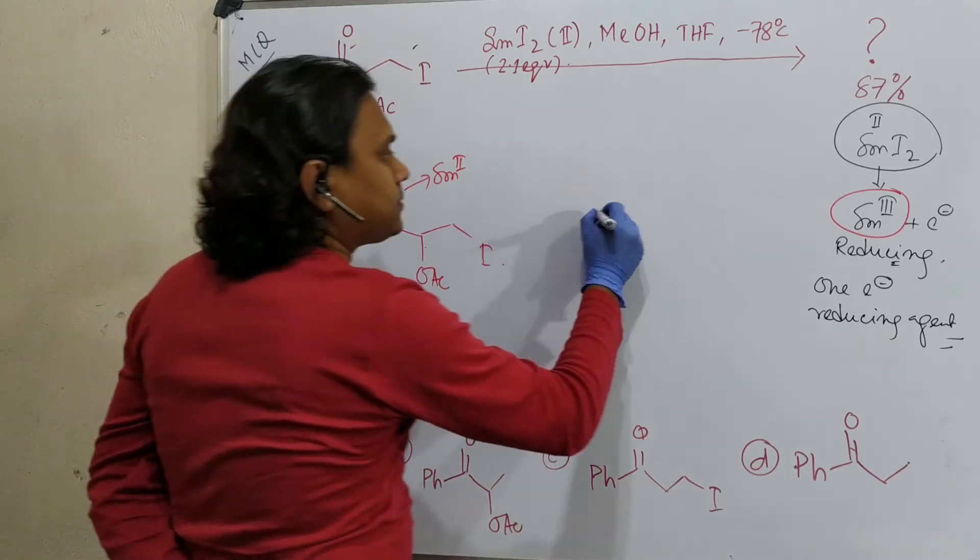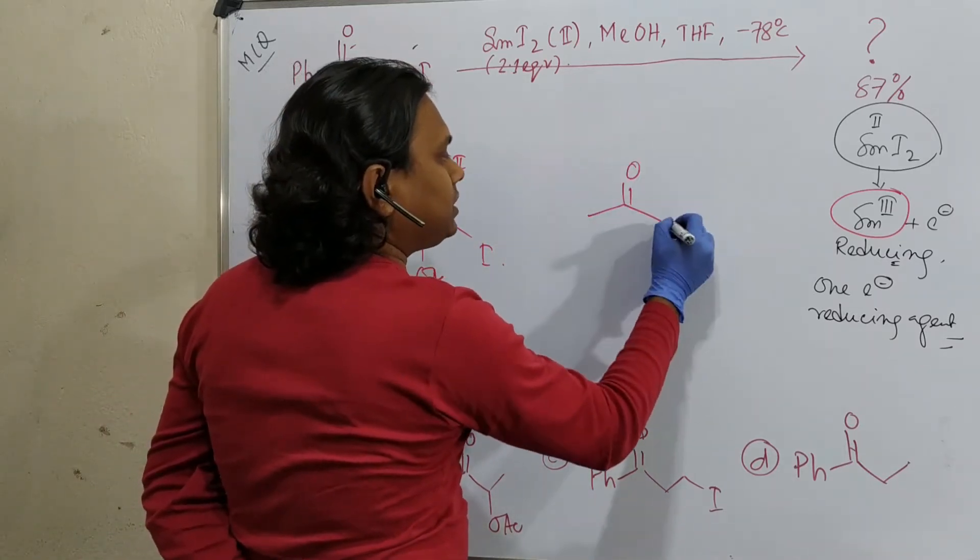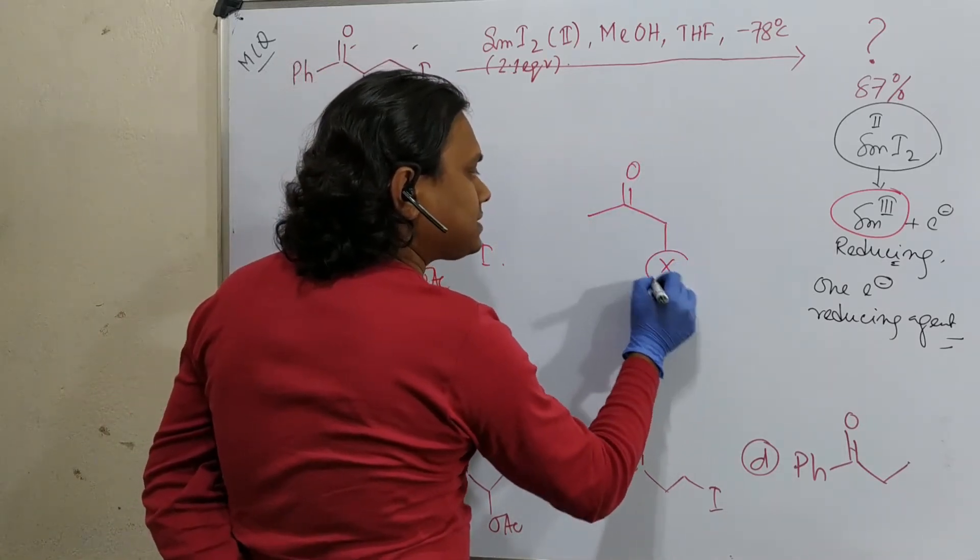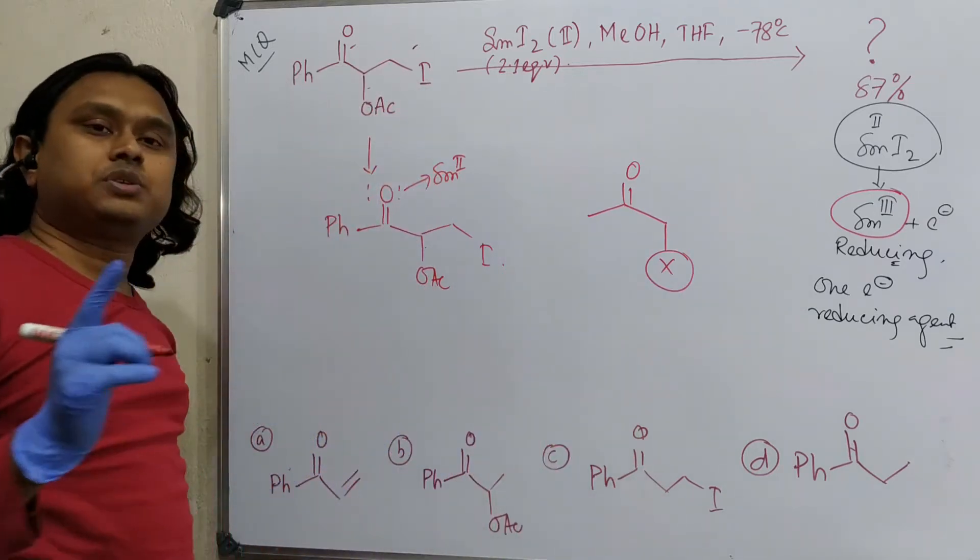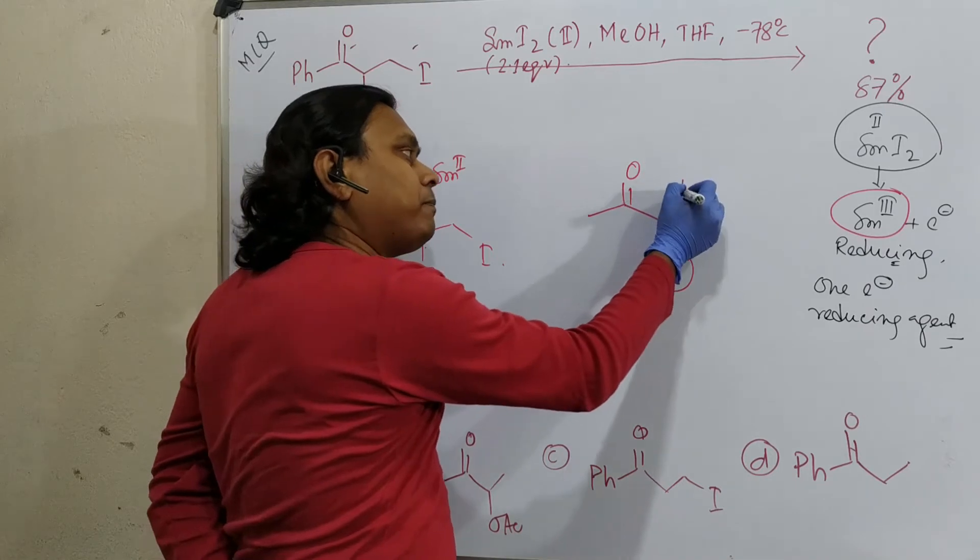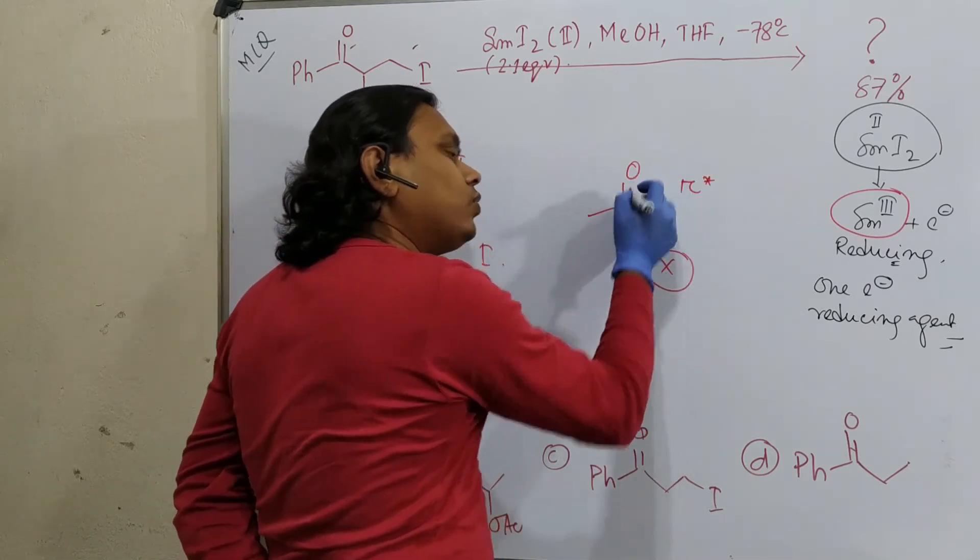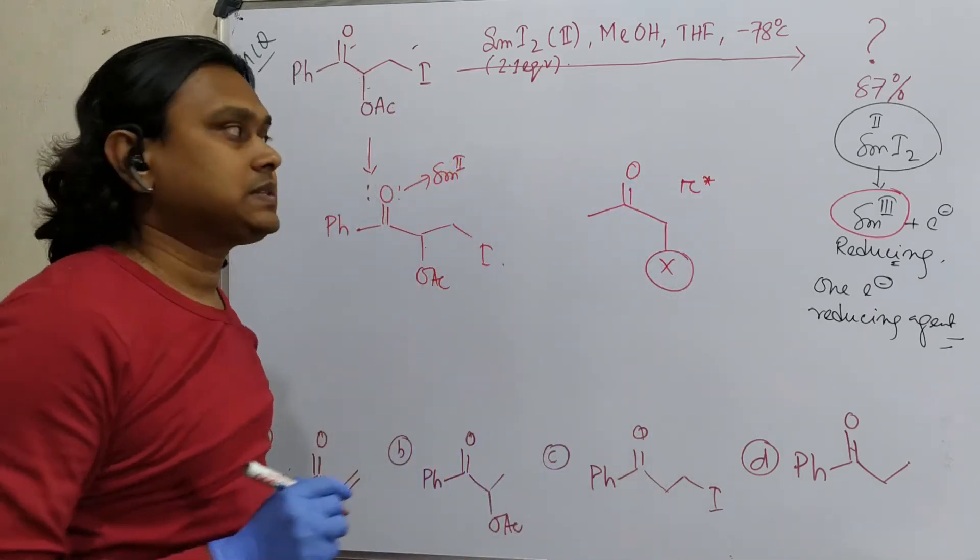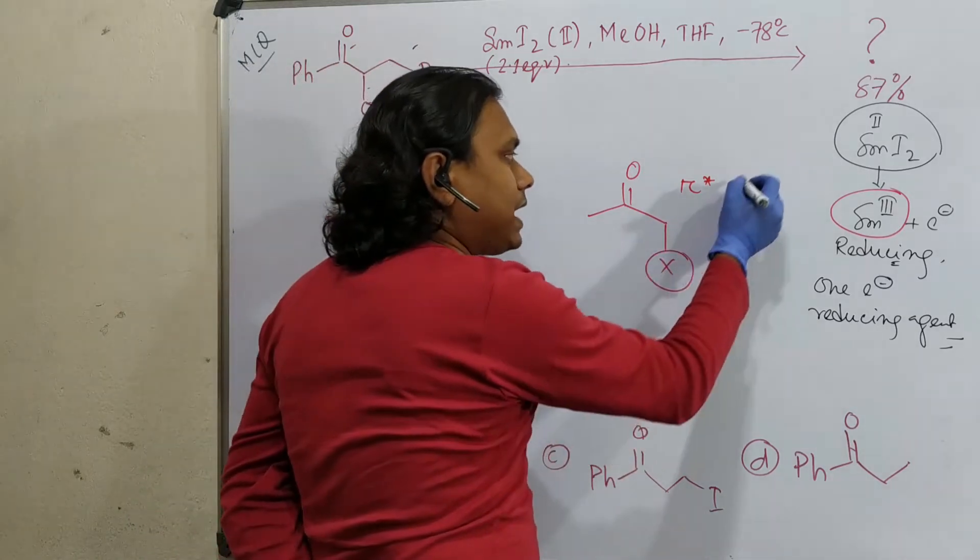then reaction proceeds through the electron acceptance on the pi star of this CO bond. Why? Because pi star could be a LUMO. Another thing, sigma star could be a LUMO.